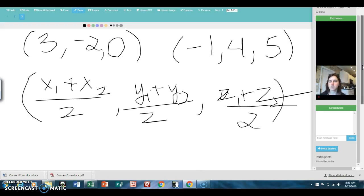So now all we need to do is plug into our formula. So the x part, I'm going to add the 3 and the negative 1. That makes 2 over 2. Next is negative 2 plus 4, also 2 over 2. And then finally, 5 over 2.